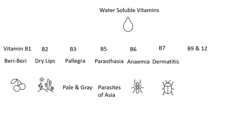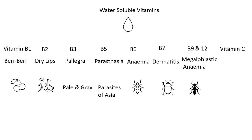B9 and B12 deficiency cause megaloblastic anemia, which can be memorized as megaloblastic ant. The final vitamin in this category is vitamin C, which links with cure, and scurvy — its deficiency disease — relates with scar.